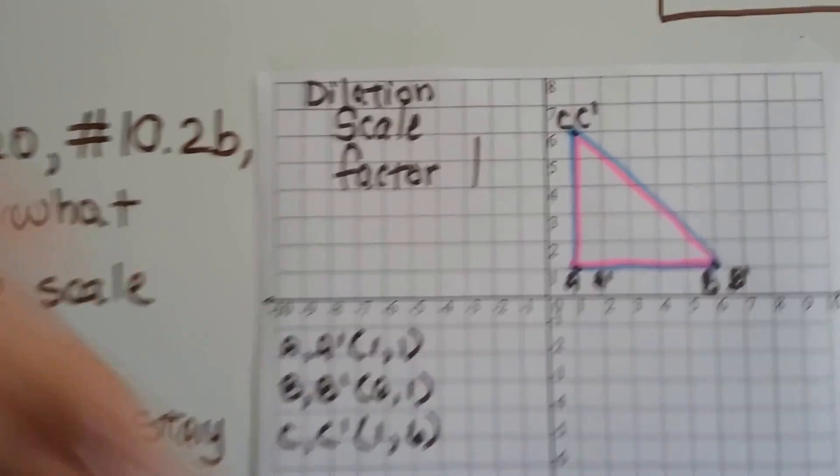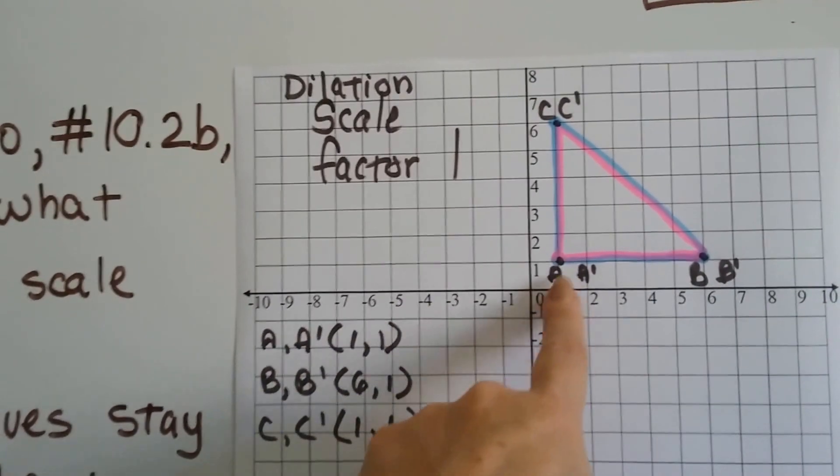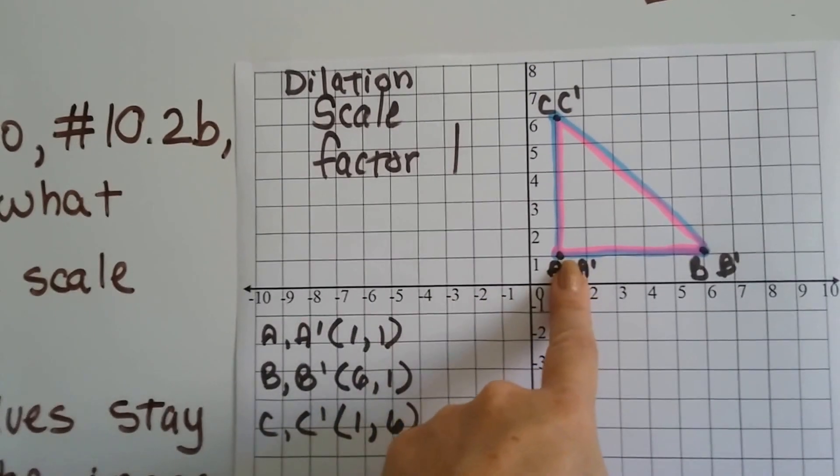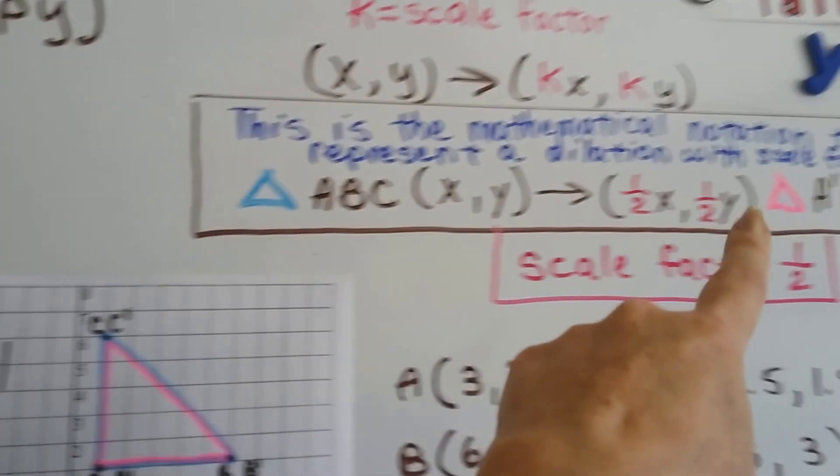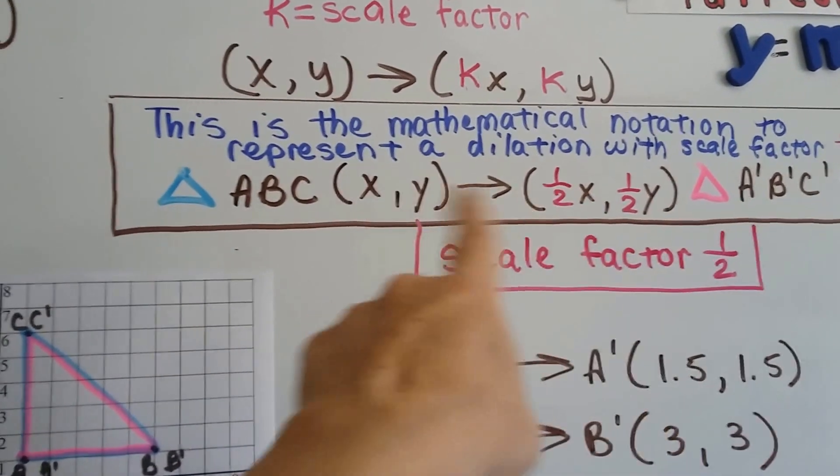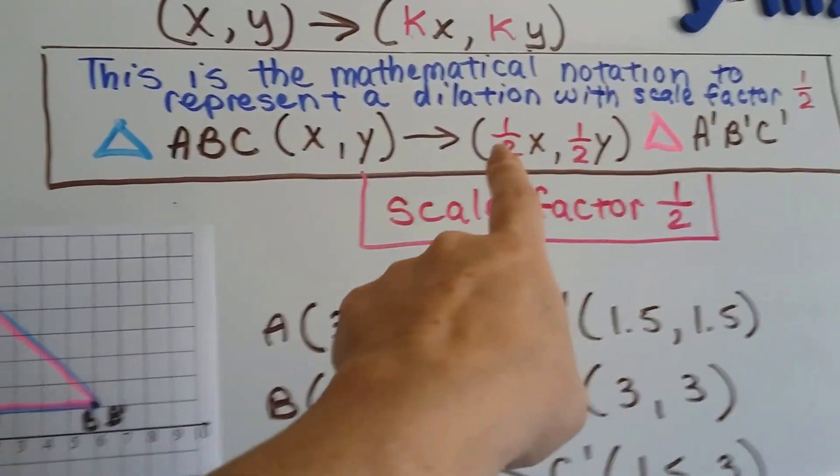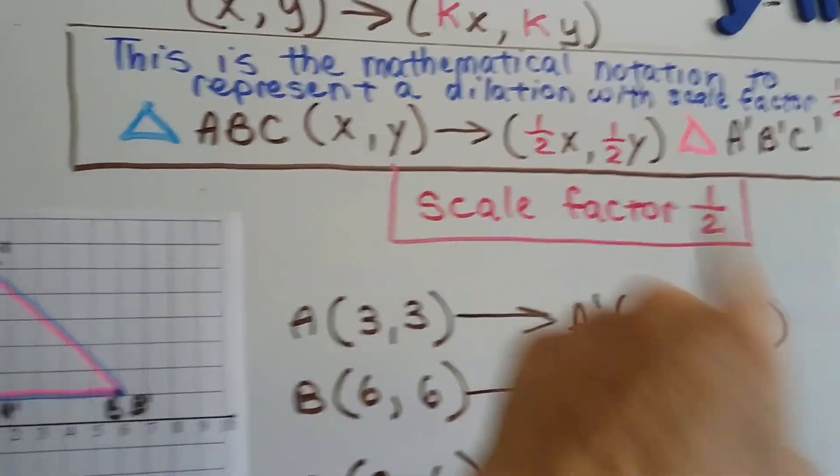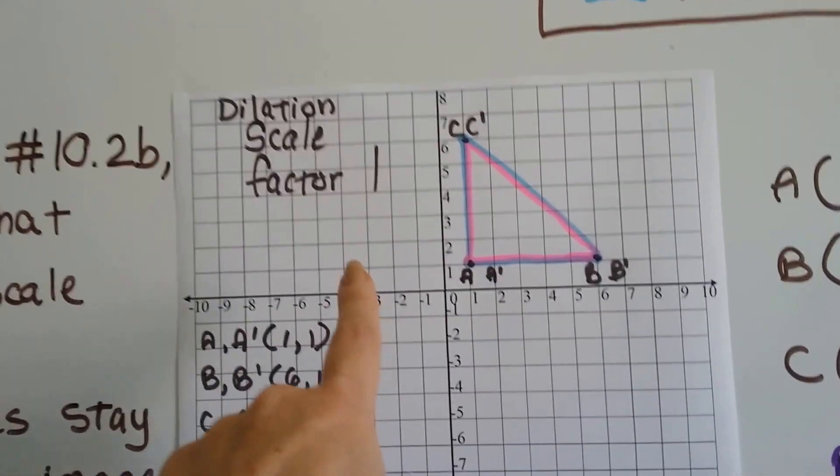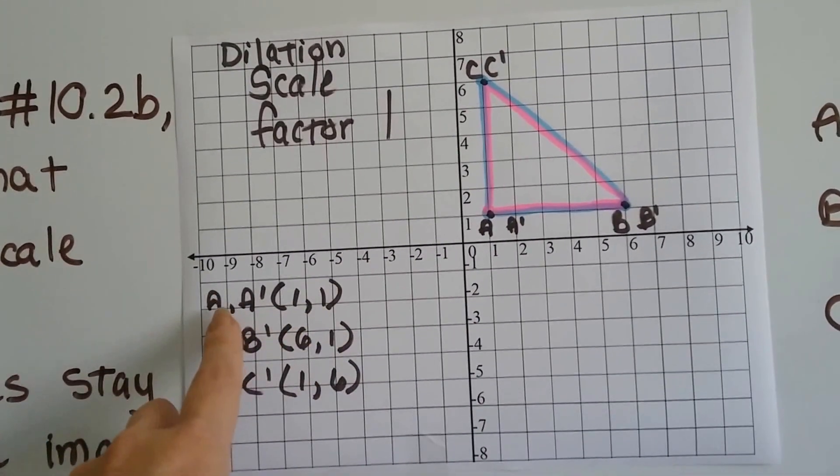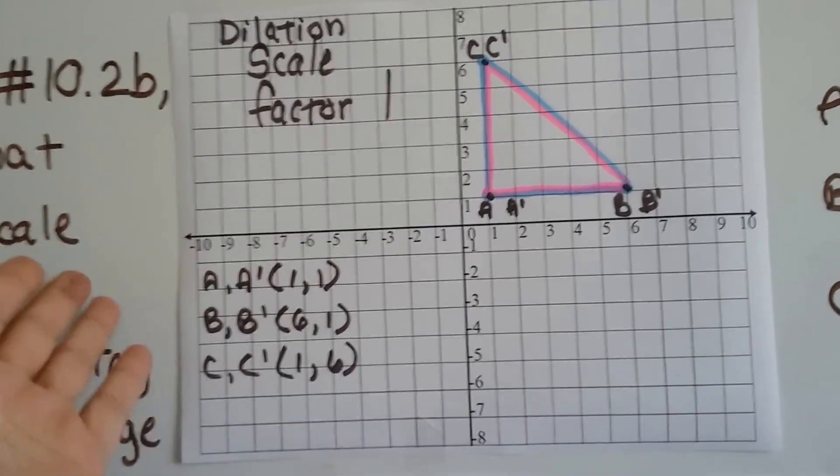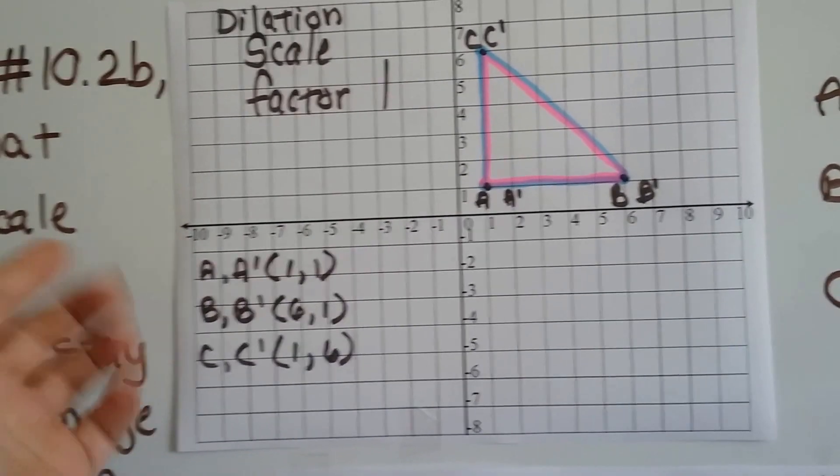So for this triangle there's a blue triangle and a pink triangle. Because the scale factor is 1, when we multiply the factors by that scale factor, in this next one it's going to be a half. But if we multiply the values for the blue triangle ABC by 1, it's going to stay the same.